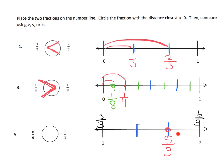Now we're going to locate eight-sixths. Eight-sixths means we need to cut each whole number into six equal parts. We already have three equal parts, so all we have to do is cut each one into two — now we have sixths. We know that one whole is six-sixths, so this is seven-sixths and this is eight-sixths right here. Five-thirds is further down the line than eight-sixths, so five-thirds is larger. We use the less than symbol: eight-sixths is less than five-thirds.